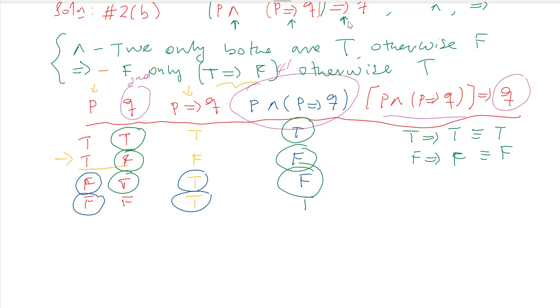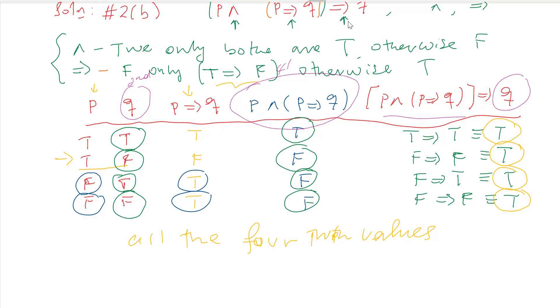False implies true is true. Lastly here, false implies false is again true. So we have shown that every combination, all the four truth values are true. So we say that the given proposition is tautology by definition.